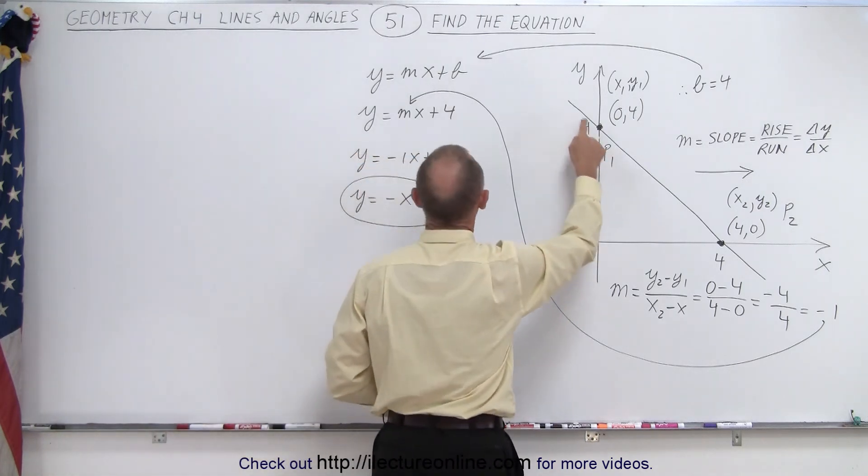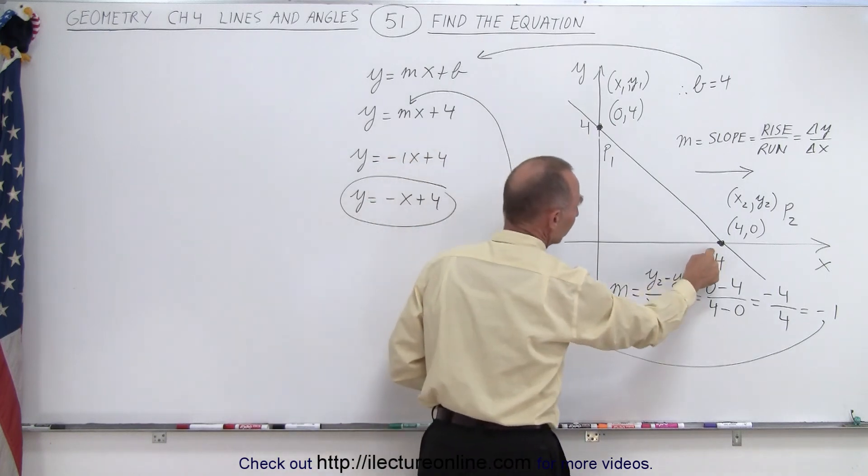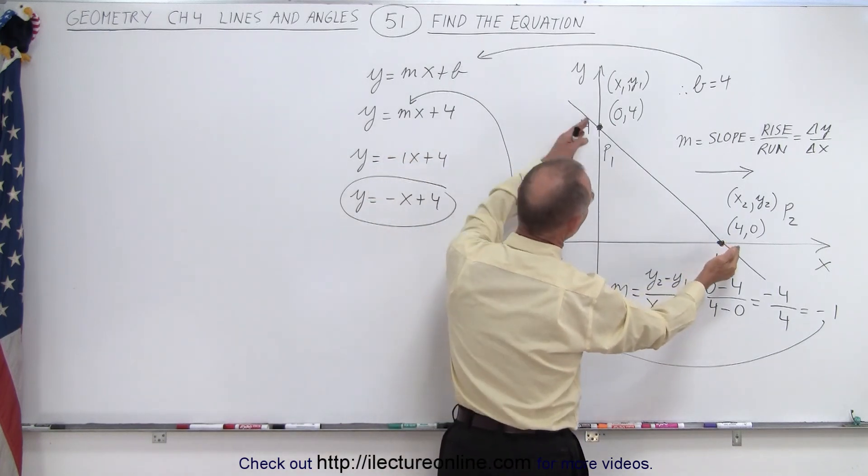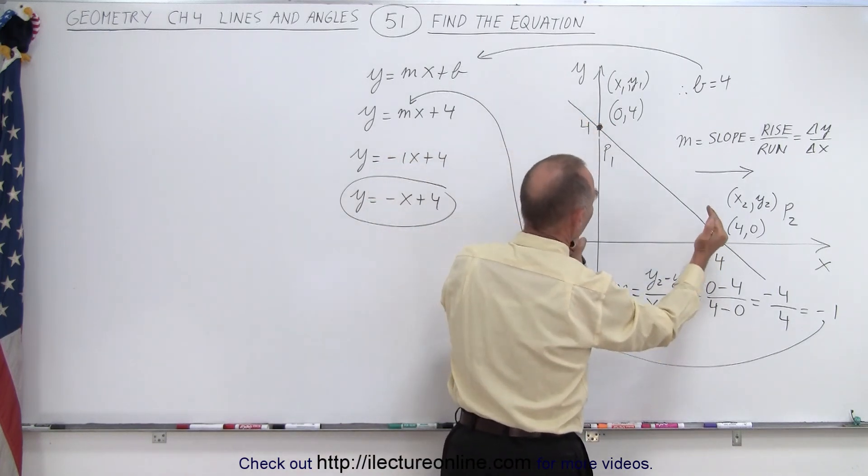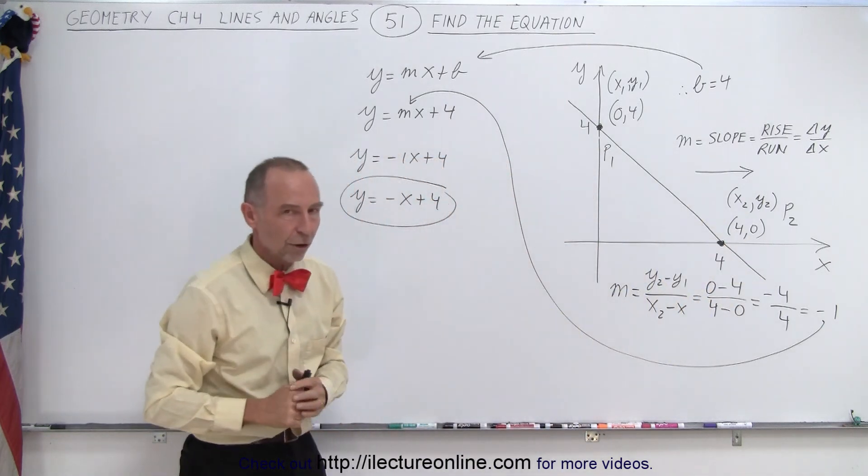You first find the y-intercept. You plug that in. And then to find the slope, if you have another point on the line, then you find the difference in the y values, the difference in the x values. Take that ratio and that's your slope.